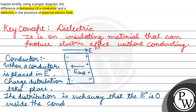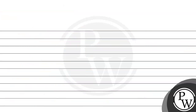Conductor ke andar joh electric field ho, woh zero hoti hai. Aur woh aise hoti hai ki joh electric field produce hoti hai — induced charge ki wajah se — joh electric field hai, woh baahar wali electric field ko cancel out karte hai. Ab dielectric ke liye.